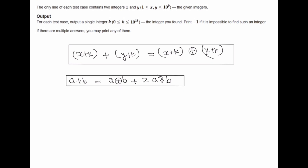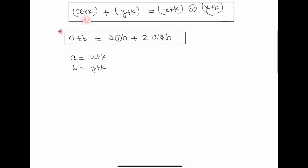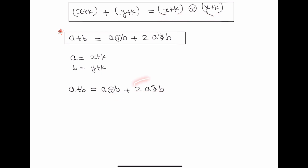This is the property we are going to use. Let a equal x plus k and b equal y plus k. On the left-hand side we have a plus b. As per the formula, a plus b equals a XOR b plus 2 times a AND b. On the right-hand side we have a XOR b, but we don't have the term 2 times a AND b.